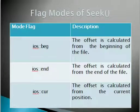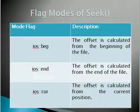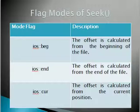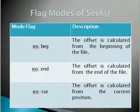ios::end points to the end of the file — if you want to go to the last position in the file, we use ios::end. ios::cur shows the current position where we are pointing, and that is known as ios::cur.